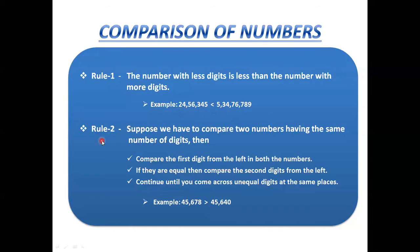Rule number two: when comparing two numbers with the same number of digits, compare the first digit from the left in both numbers. In our example, both first digits are 4 — equal, so we can't conclude. Move to the second digit from the left: both are 5 — still equal, so we continue.